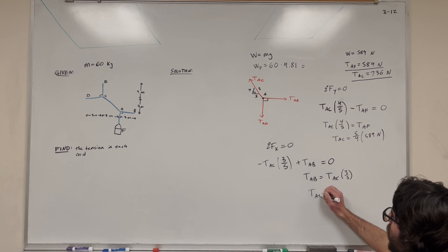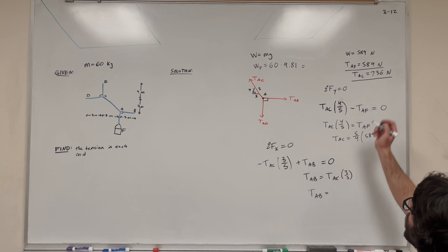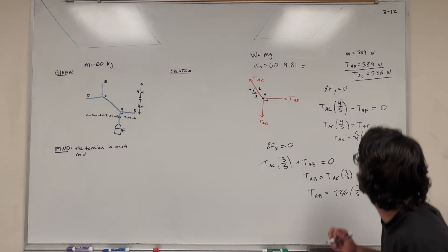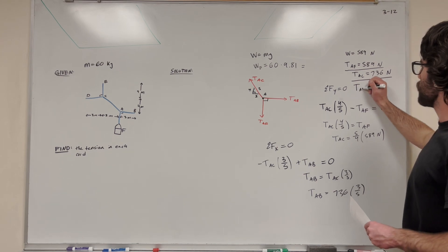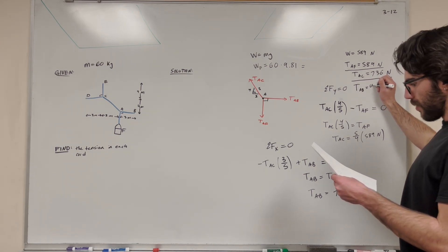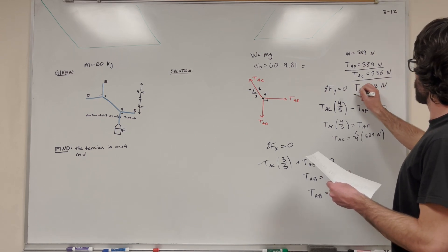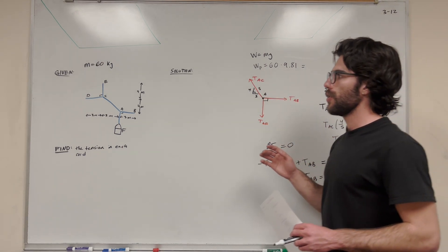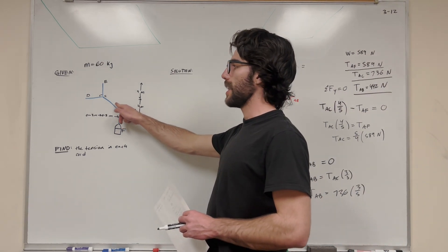So we can move it to the other side to get tension AB is equal to tension AC times 3 fifths. Then of course, we can plug in. We know for tension AC, we just found that. 736 newtons times 3 fifths. Tension AB is equal to 442 newtons. There we go. So we've done all we could do with this free body diagram. We have this tension, this tension, this tension found.